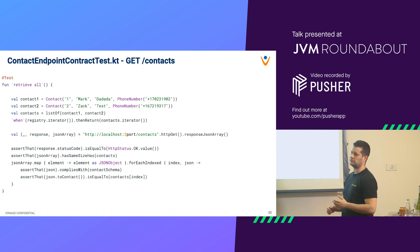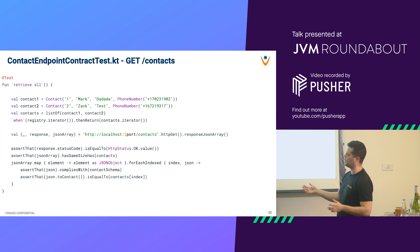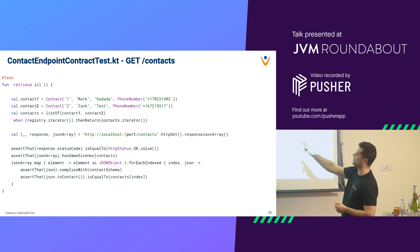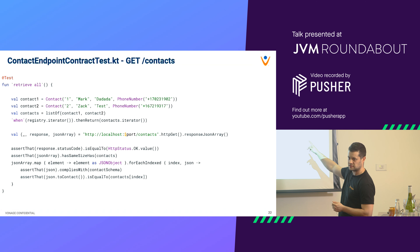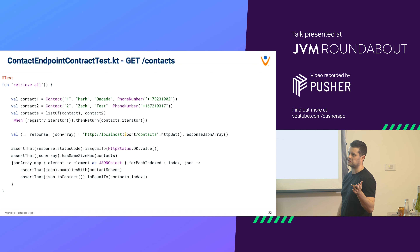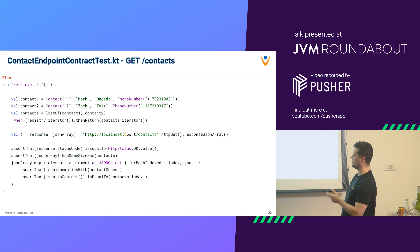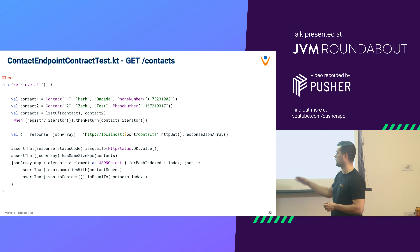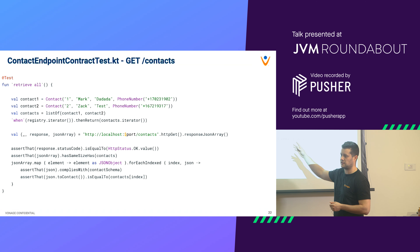For the retrieval test — essentially the same idea but slightly faster to walk through. I create two contacts, put them in a list, set up the expectation that when registry.iterator is called it returns those two as an iterator, then make the proper request based on the port and retrieve the result as a JSON array. Once I have the JSON array, I check the status code is OK and verify the array has the same size as the contacts list. Then for each element as a JSON object, along with its index, I check that the JSON complies with the schema — since each element in the array must comply — and also verify that parsing it maps to the indexed contact in the list.